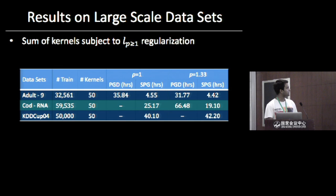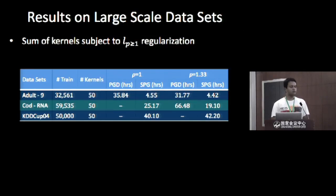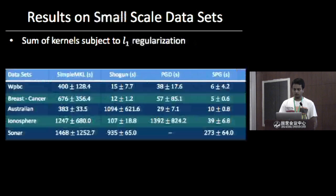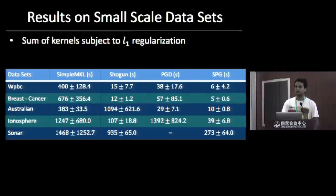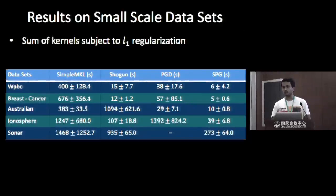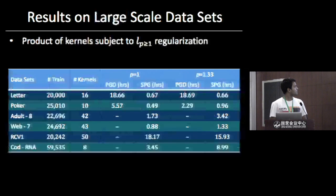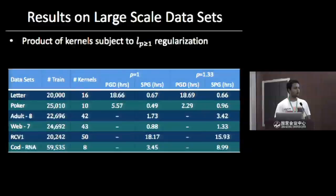Results on small-scale datasets with sum of kernels and L1 and L1.33 regularization: on most datasets PGD fails to converge, and wherever it does converge it is much slower than SPG. Comparing SPG to specialized algorithms like Shogun and SimpleMKL — which are made just for a single MKL formulation handling sum of kernels with L1 regularization — SPG was always at least twice as fast as Shogun. Using product of kernels instead of sum of kernels poses a very challenging non-convex optimization, where PGD fails to converge on the majority of datasets.